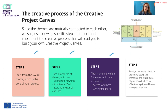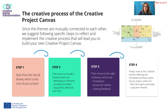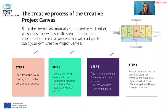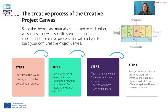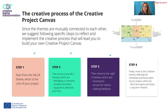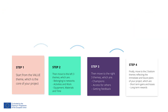Start from the value theme, which is the core of your project, then move to the left three themes: belonging to networks, activities and work, and equipment, materials and time. Then move to the right three themes: champions, access for others, and getting feedback. Finally, move to the two bottom themes reflecting the immediate and future plans of your project, which are short-term gains and losses, and long-term rewards.